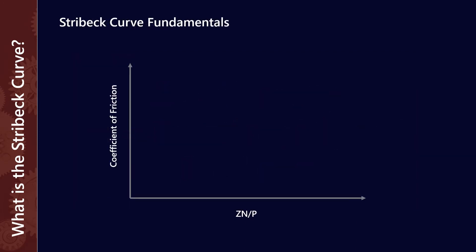So what does the actual Stribeck curve look like? You've probably seen it in textbooks — it looks something like this. This is the classical version you probably already know, and it's really divided up into three different sections, which we'll go through each in turn.